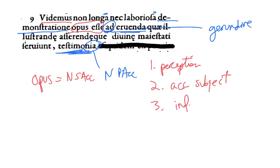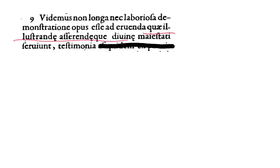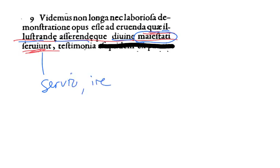For unearthing the proofs — what kind of proofs are they? They are proofs which tend toward the illuminating, ILLUSTRANDI, and the establishing of the divine majesty. So we have one noun, namely MAESTATI, the grandeur or glory, and it has several adjectives: ILLUSTRANDI, a gerundive; ASSERENDI, another gerundive; and DIVINAE, a simple adjective. Why are these all dative? The verb SERVIO, SERVIRE, always patterns with the dative. Tune in next time for more Calvin.